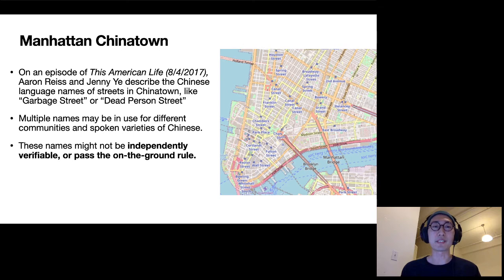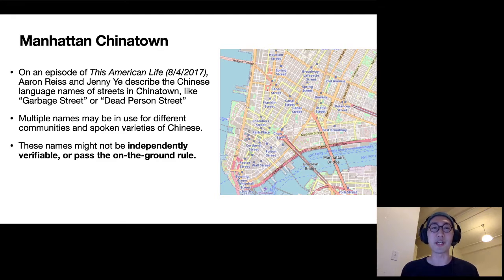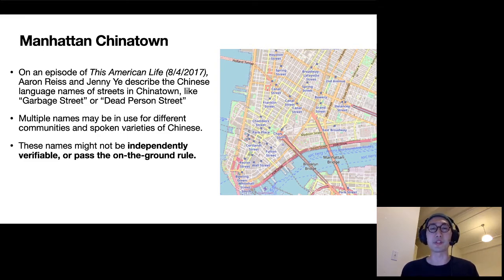There's an episode of the radio show This American Life that describes the Chinese language names of streets in Chinatown — they have very colorful names like Garbage Street or Dead Person Street, and there might be multiple names in use for different Chinese languages as well as among different communities. However, these names might not be independently verifiable or follow the on-the-ground rule — there might not be any signage for these names, so it's kind of hard to justify their inclusion in OpenStreetMap.